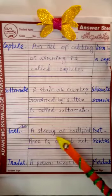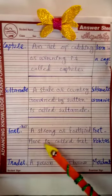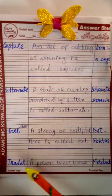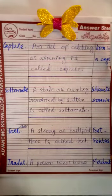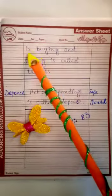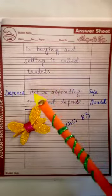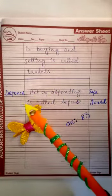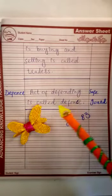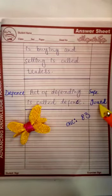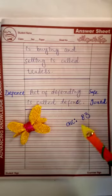Fort — a fortified place is called a fort, for example, Fort Rohtas. Trader — a person whose business is buying and selling is called a trader. The last definition is Defense — the act of defending is called defense, for example, safeguard.